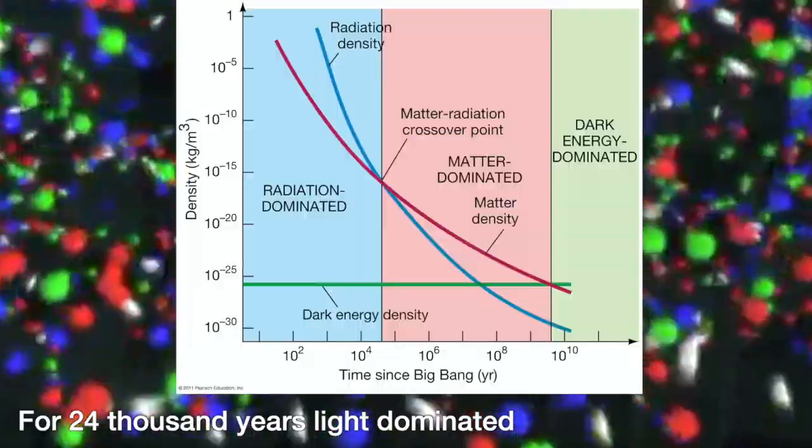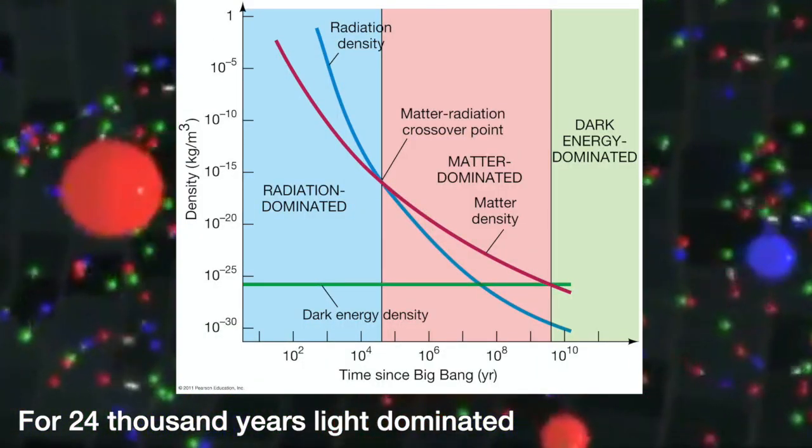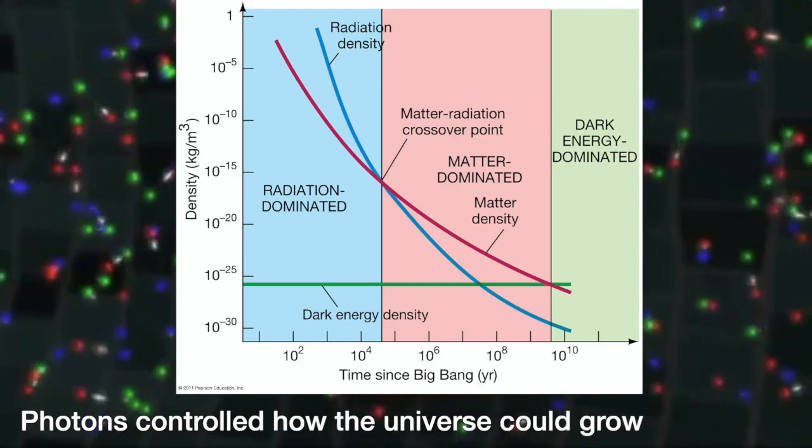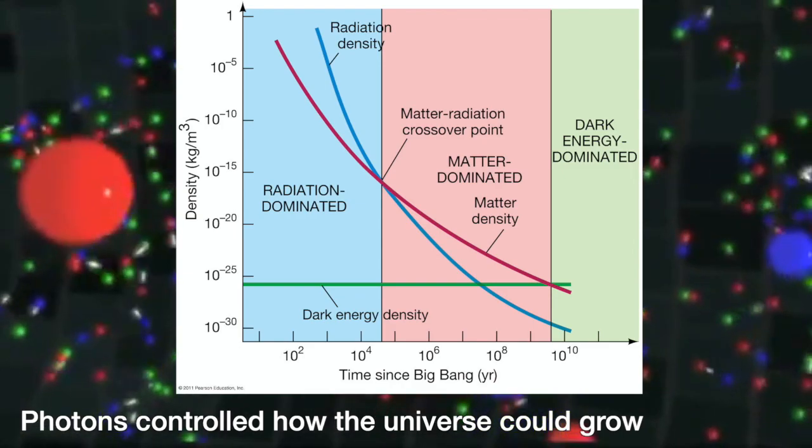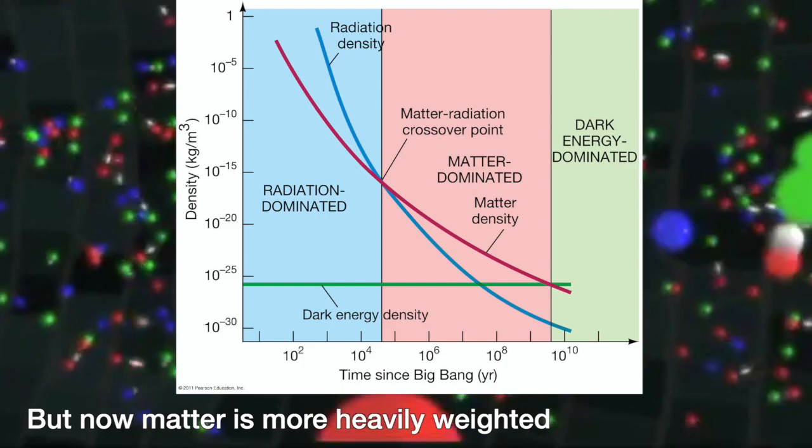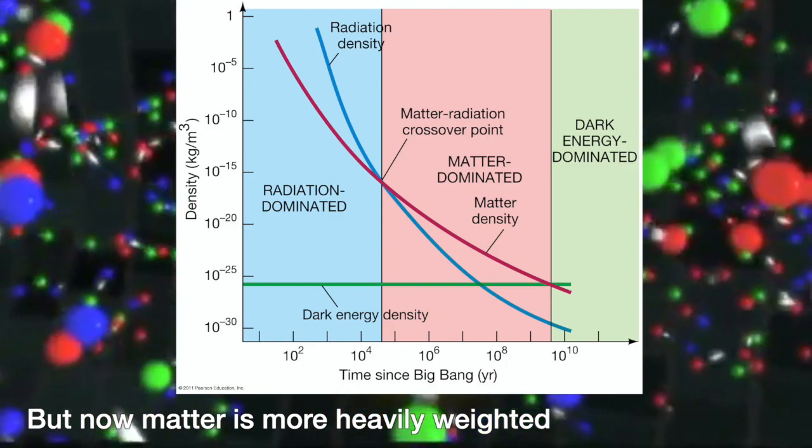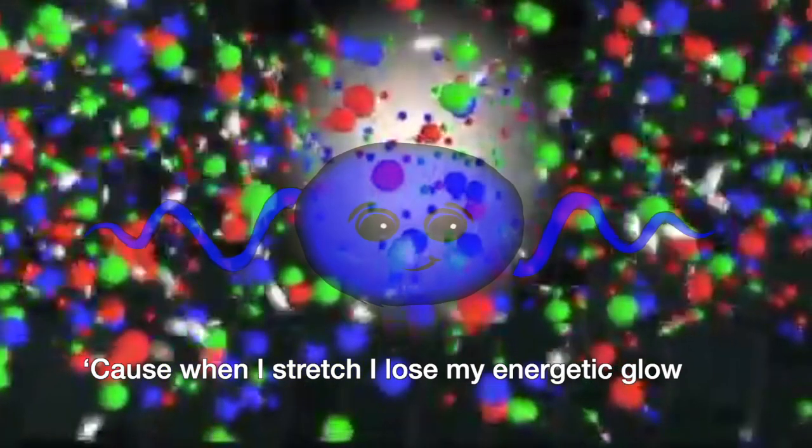For 24,000 years light dominated. Photons controlled how the universe could grow. But now matter is more heavily weighted, cause when I stretch I lose my energetic glow.